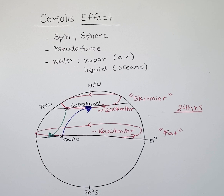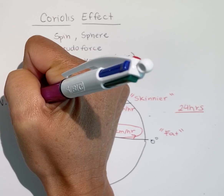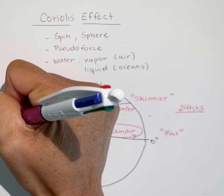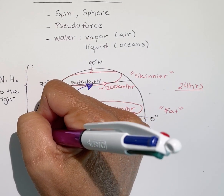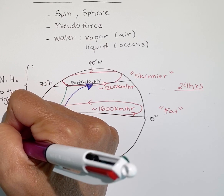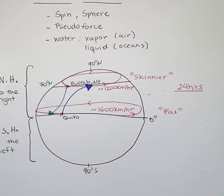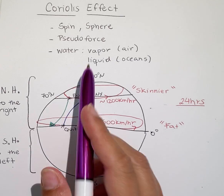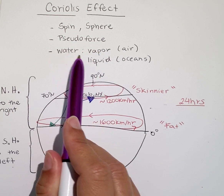In the Northern Hemisphere, the Coriolis effect deflects things to the right of the target. In the Southern Hemisphere, the deflection is to the left of the target. This deflection to the right or to the left is the Coriolis effect, and it acts on air, water vapor, and liquid water in the oceans.